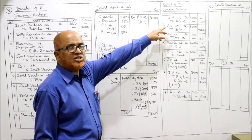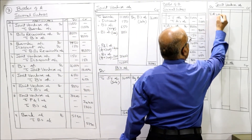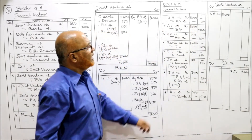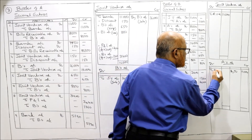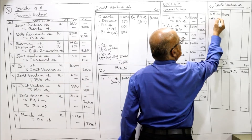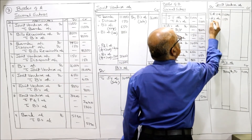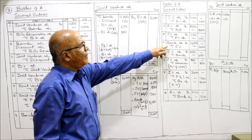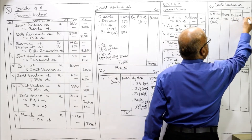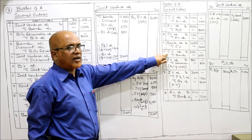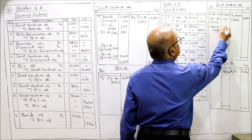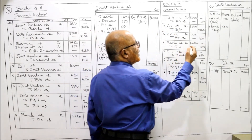Now posting the entries: Joint Venture Account Dr. to A's Account - joint venture debit side to A's account 11,000. A's account is credited by joint venture 11,000. A's Account Dr. to Bills Payable - A's account debit side 8,000. Joint Venture Account Dr. to A's Account for discounting charges 150. Bank Account Dr. to Joint Venture Account for sale 16,000. Joint Venture Account Dr. to Bank for expenses 650. Joint Venture Account Dr. to Commission Account 800.